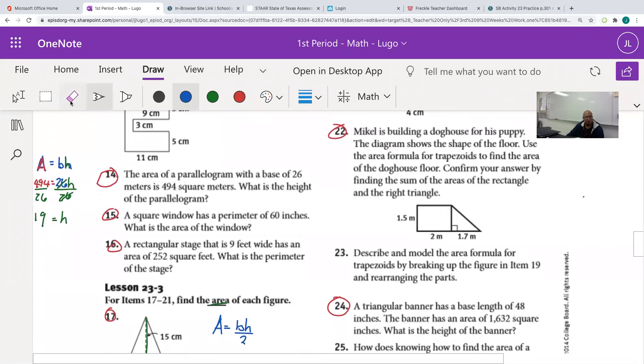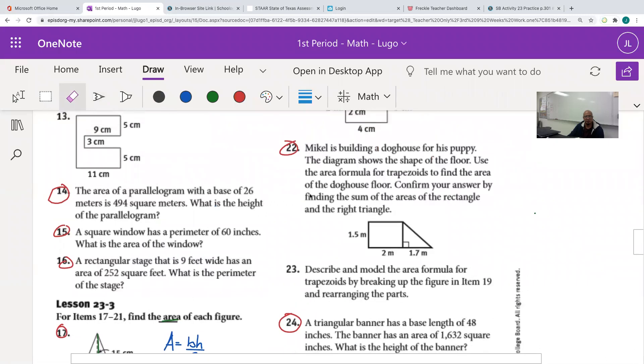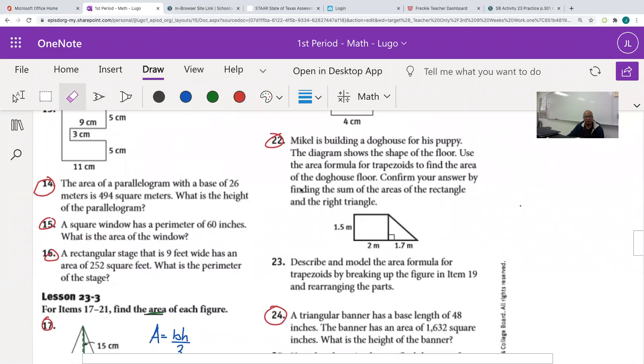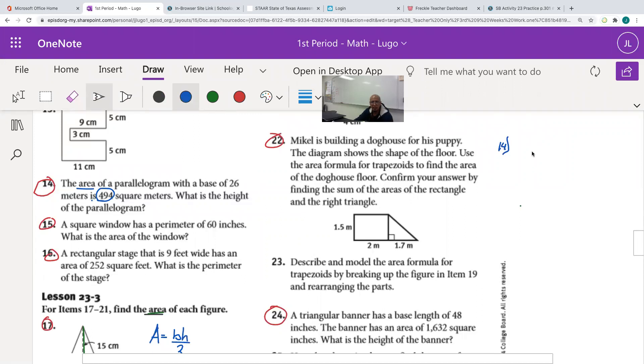Moving on to number 14. I'm moving on here to number 14, and I want to work number 14 here on the side. So number 14, the area of a parallelogram with a base of 26 meters. So the base is 26. The area is 494 square meters. That's the area. Okay? Again, it's a parallelogram. So for number 14, we know that the area is equal to base times height. So guys, always begin with the formula. Always begin with the formula.